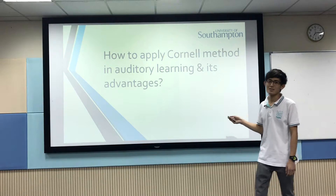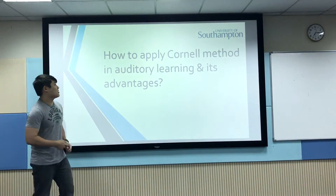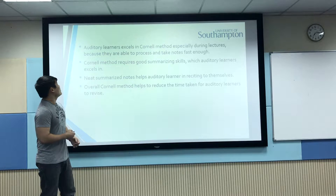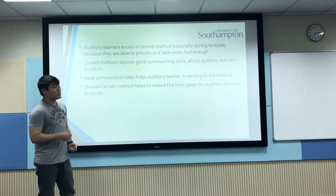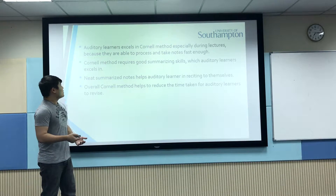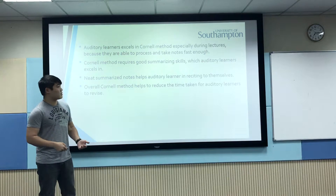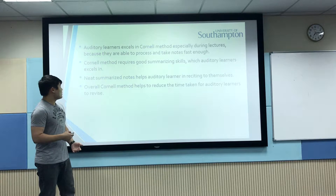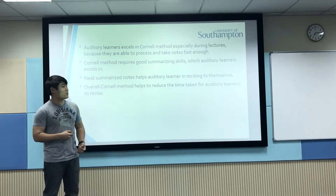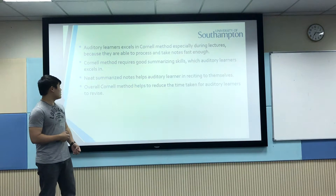I will hand my presentation to my friend William to explain the advantages. The advantages of Cornell method for auditory learners: auditory learners excel in Cornell method especially during lectures because they are able to process and take notes fast enough. Cornell method requires good summarizing skills which auditory learners excel in, and neat summarized notes help auditory learners recite to themselves. Overall, Cornell method helps reduce the time taken for auditory learners to revise.